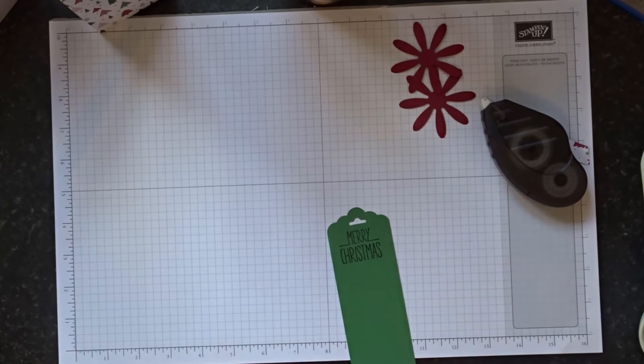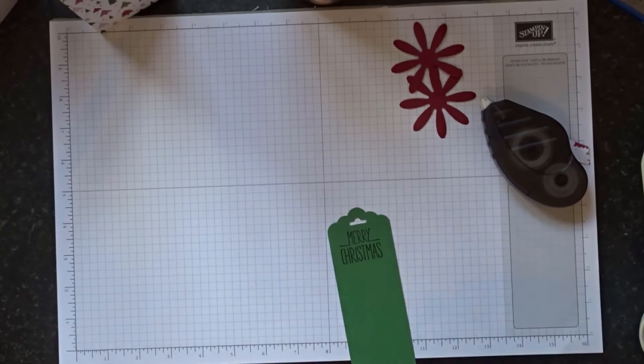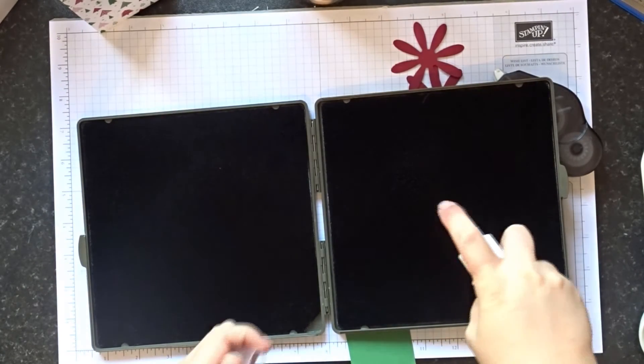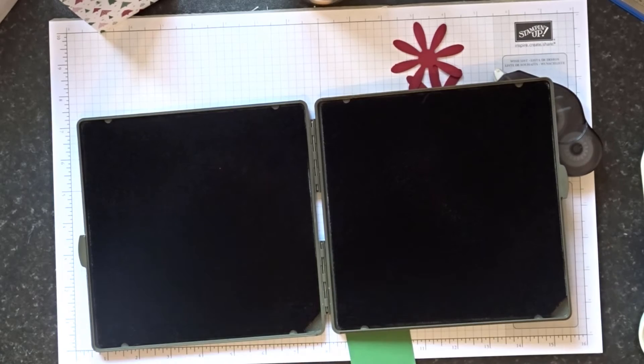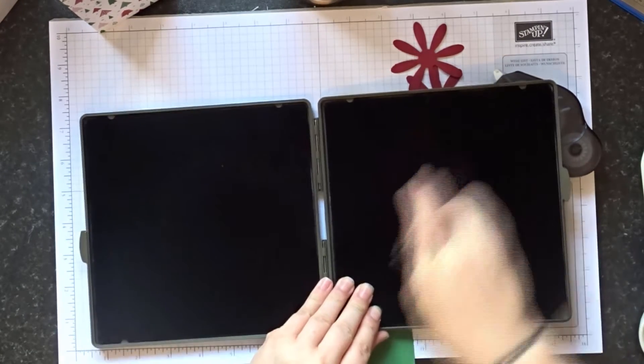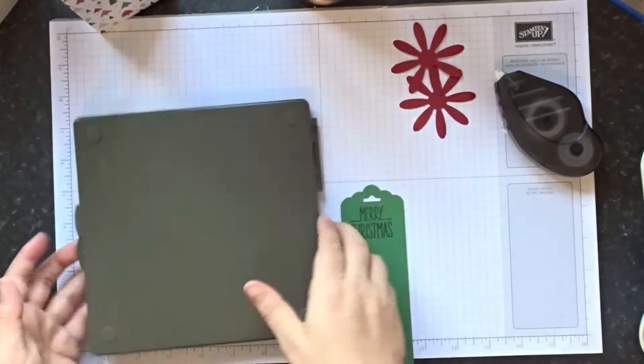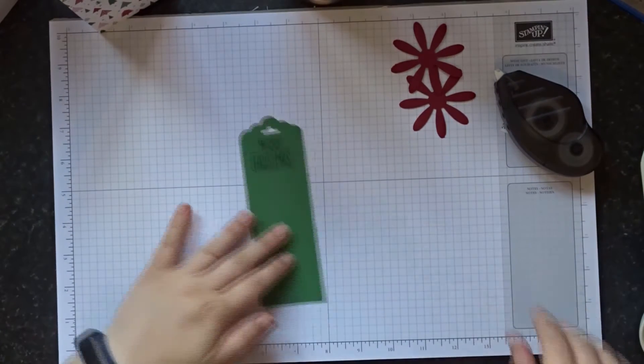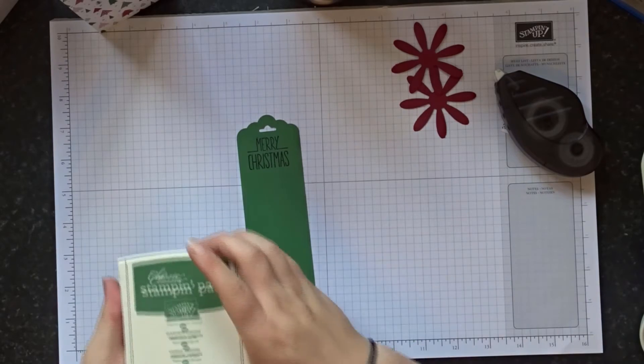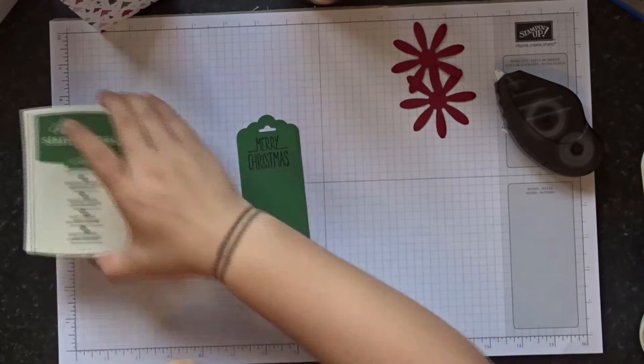I'm just going to clean this as it will stain if I don't. So grab your stamp and scrub and some stamping mist and just give it a little clean. We're now ready to grab our garden green ink pad. No we're not, we'll do that in a second.